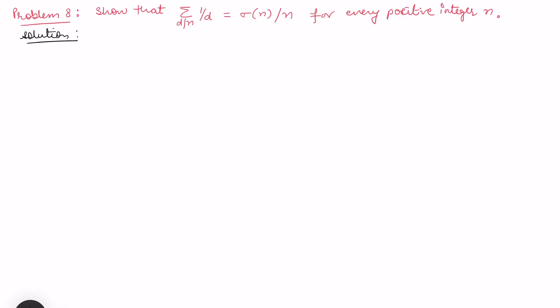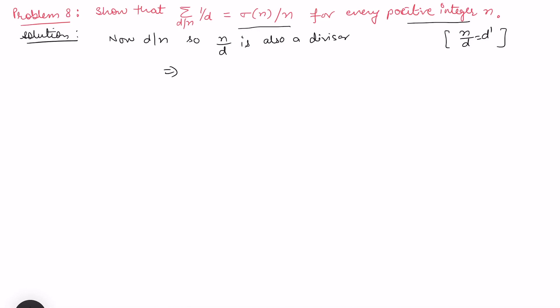In the next question we want to show that the summation over d divides n of 1/d is equal to σ(n)/n for every positive integer n. If d divides n, then n/d is also a divisor, and we can call this d'. So d times d' equals n.